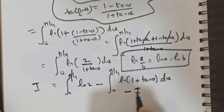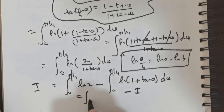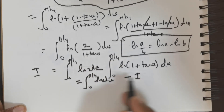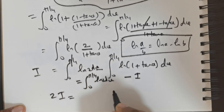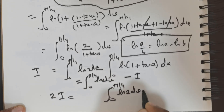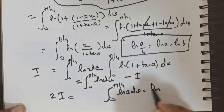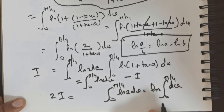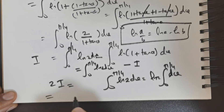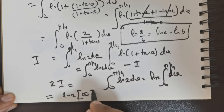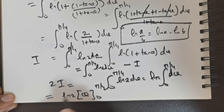So we have I = integral from 0 to π/4 of ln 2 dθ − I, which gives 2I = integral from 0 to π/4 of ln 2 dθ. Since ln 2 is a constant, we take it out: 2I = ln 2 times the integral from 0 to π/4 of dθ, which equals ln 2 times [θ] from 0 to π/4.